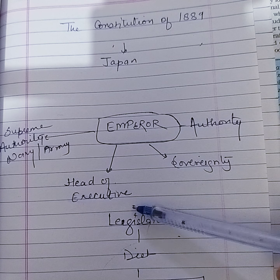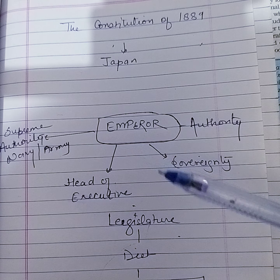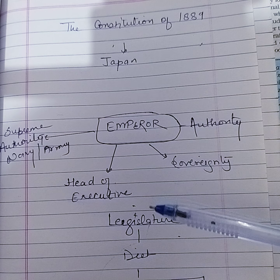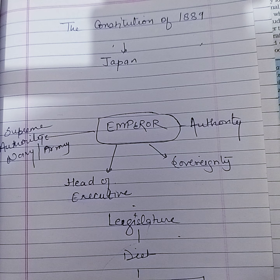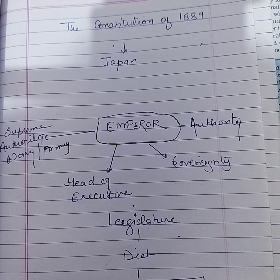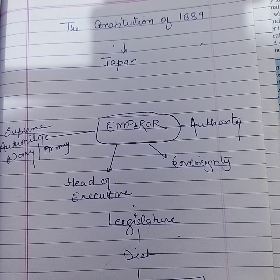The Emperor could issue ordinances which had the force of law. As head of the executive branch of government, he was the supreme commander of the army and navy. He declared war, made peace, and concluded treaties. But in many respects he did not rule directly — his functions were executed by ministers who were responsible to him.